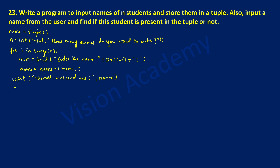Next I'm going to take one more variable called search, which is equal to an input statement. I'll ask the user to enter the name to be searched. Here I'm going to write in a double quotation mark: 'enter the name to be searched', then close the bracket.